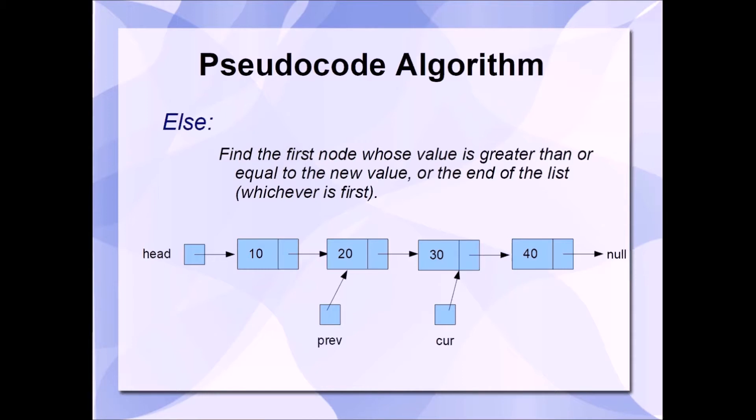Is curr null? No. Is the value inside of curr's node less than our new value of 35? Yeah. So, since both those things are true, we advance the pointers again. We set curr to curr next. We set prev to prev next.